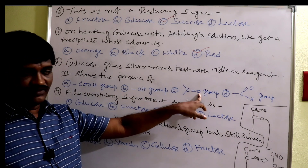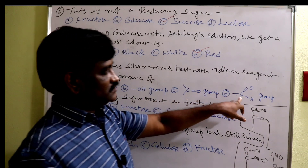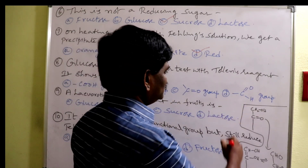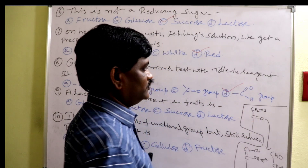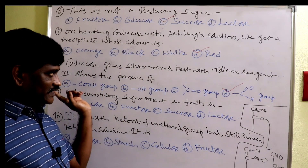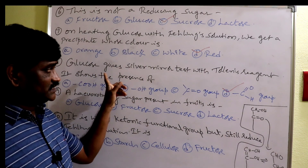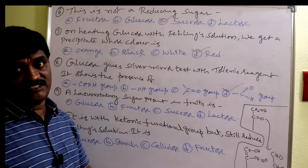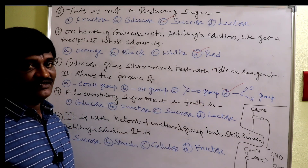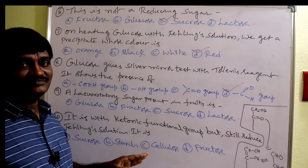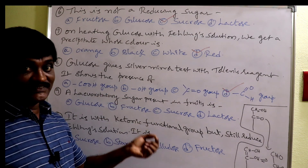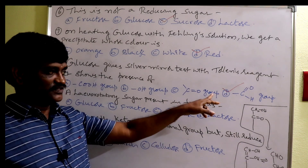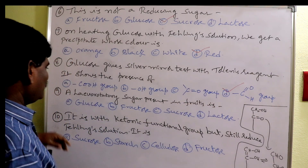Aldehydes — including aromatic aldehydes — also give the silver mirror test with Tollens reagent. Very very important: also some alpha-hydroxy ketones give a positive Tollens reagent test. Only ketones without an alpha-hydroxy group do not give this test.